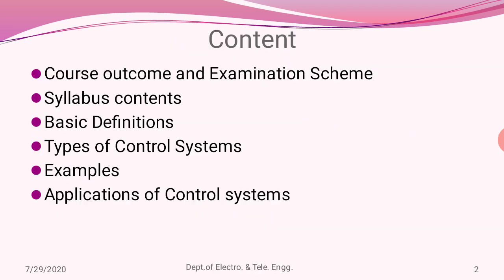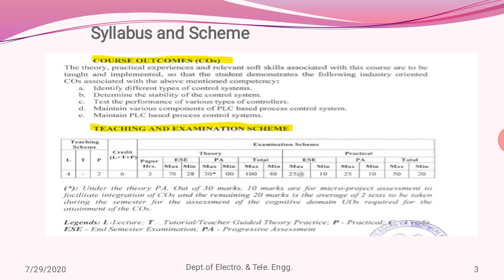In this session we will be looking into the basics of control system, which has a weightage of 12 marks. Let us look into the content of this presentation: firstly we'll see the course outcome and scheme, then briefly the syllabus content, then starting into unit one we'll look into basic definitions, types, and basic examples of control systems, and finally the applications of control systems.